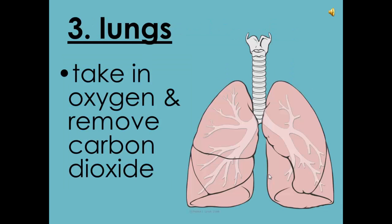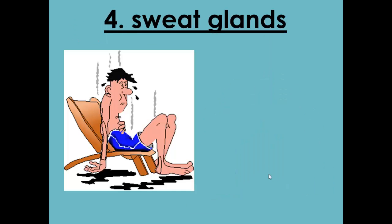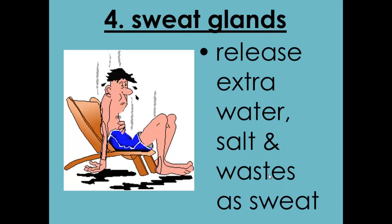Your lungs are also a part of the excretory system because they remove carbon dioxide, which is a waste. Carbon dioxide cannot be used by your body in any way, so it's removed — meaning the lungs are part of both the respiratory system and the excretory system. Your sweat glands are also a part of the excretory system. They release extra water, salt, and wastes as sweat, so sweat is also a waste product from your body.